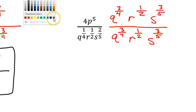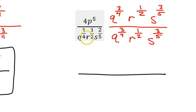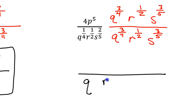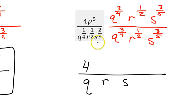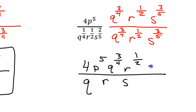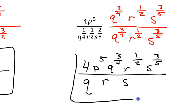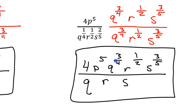Multiplying the denominator: each exponent pair adds to 1, so this will just be q, r, and s — because 1/4 plus 3/4 is 4/4 = 1, 1/2 plus 1/2 is one whole, and 2/5 plus 3/5 is 5/5 = 1. In the numerator, combining everything: 4, p to the 5th power, q to the 3/4 power, r to the 1/2 power, and s to the 3/5 power. And that is how you rationalize the denominator using fractional exponents.